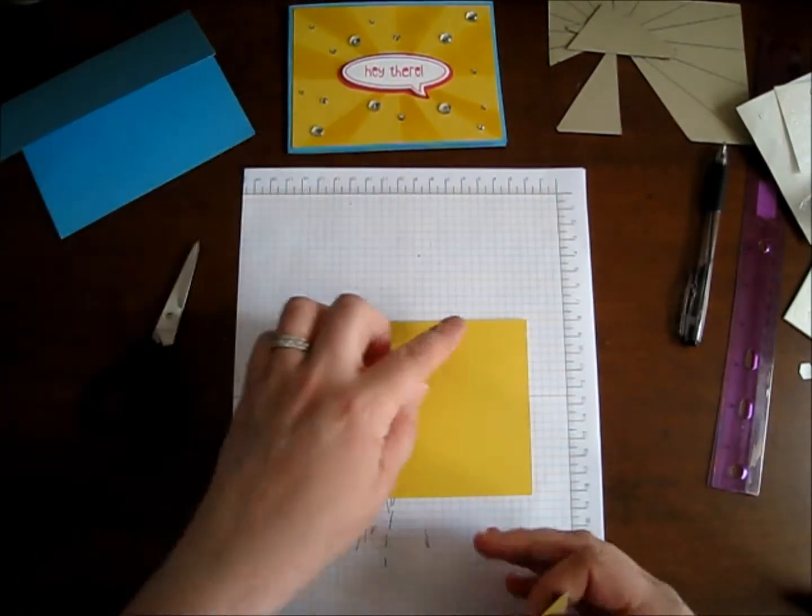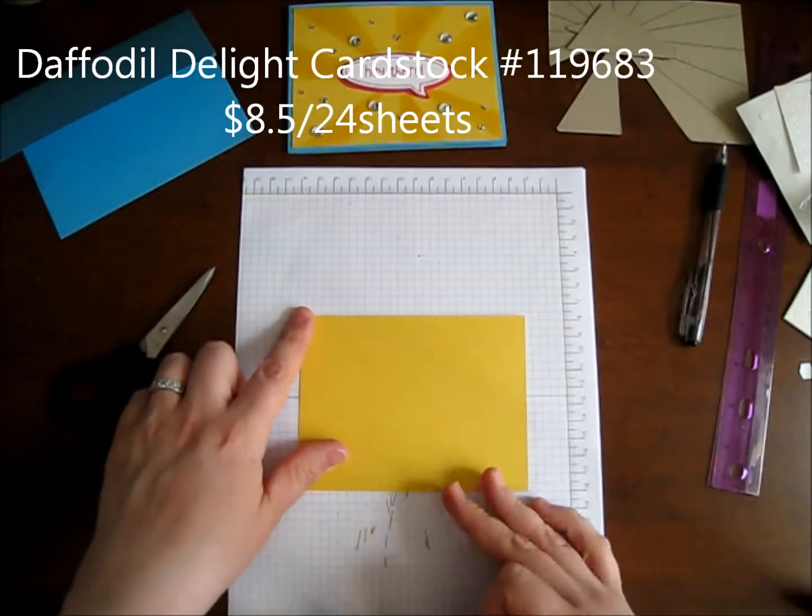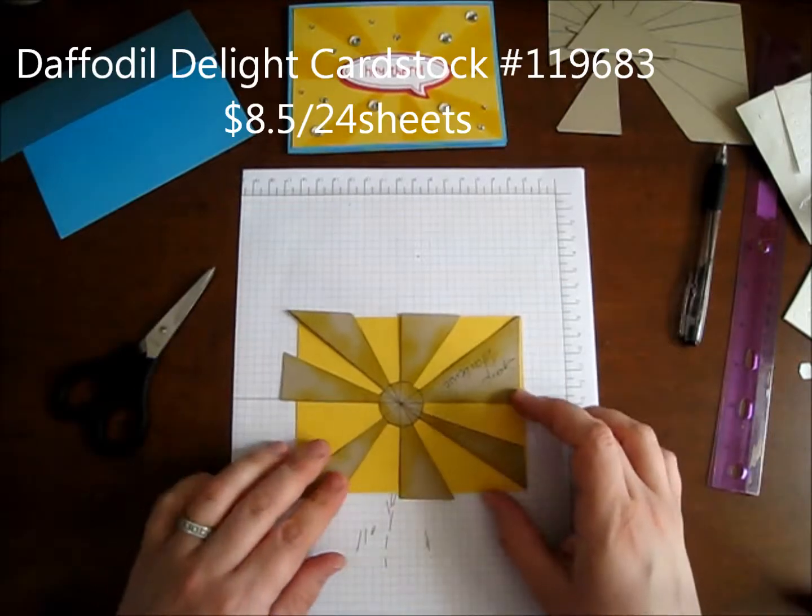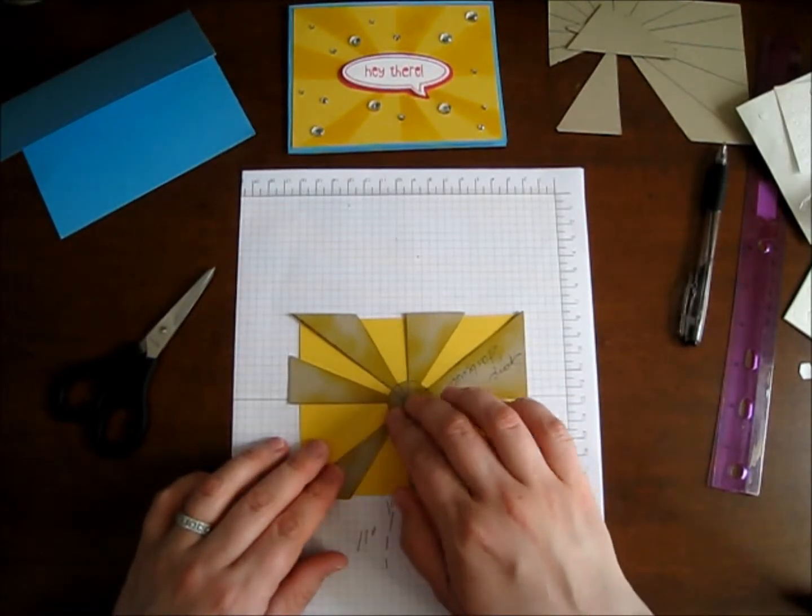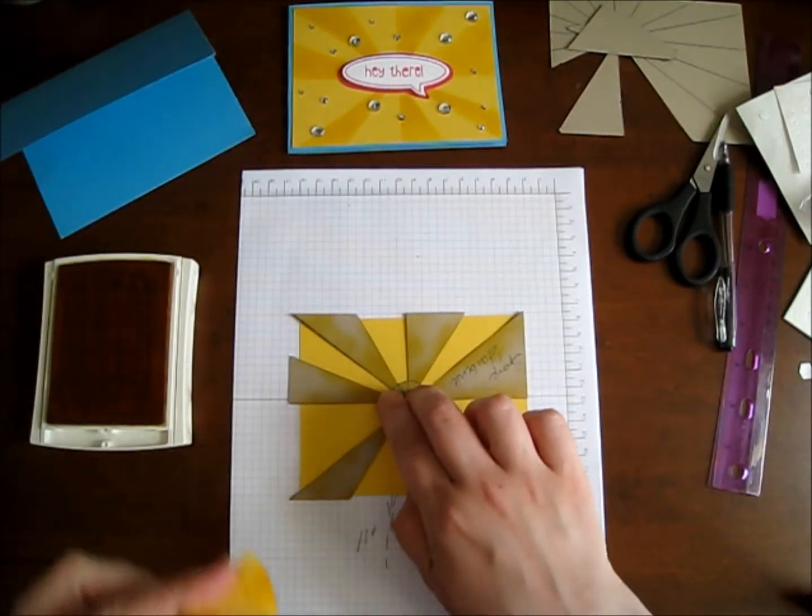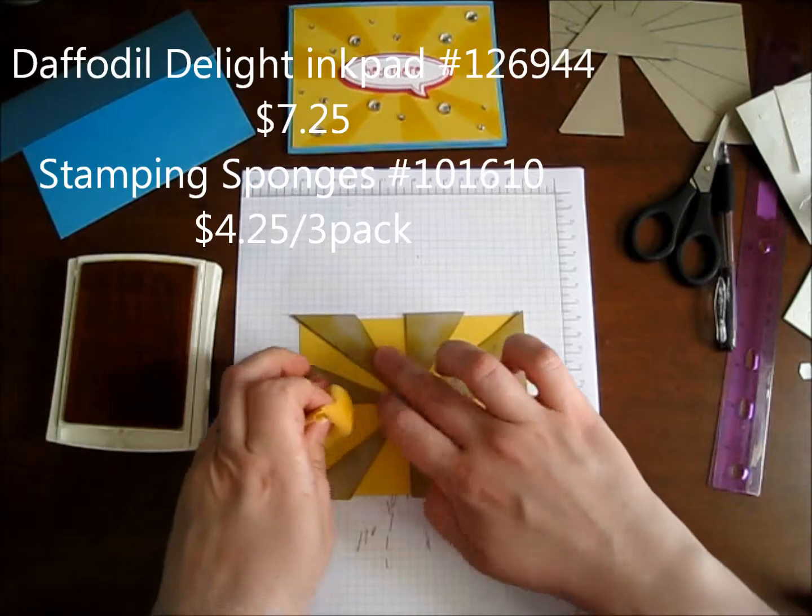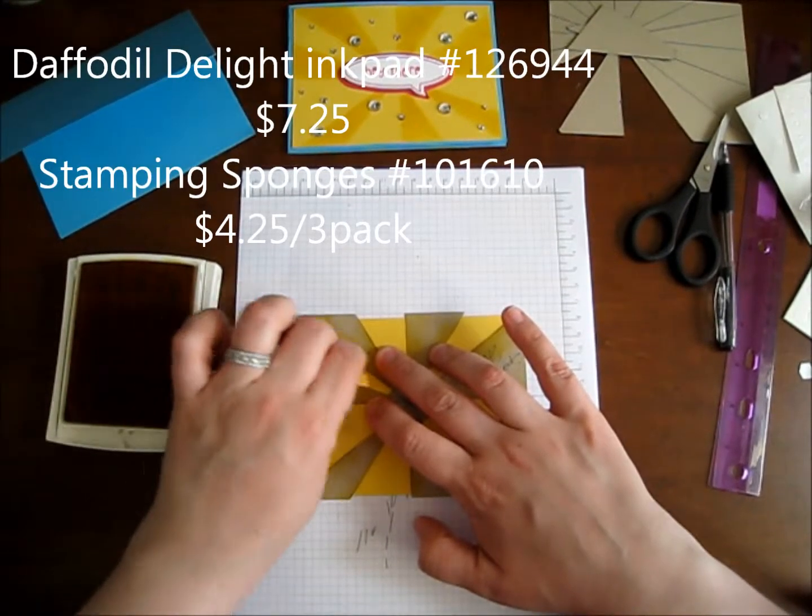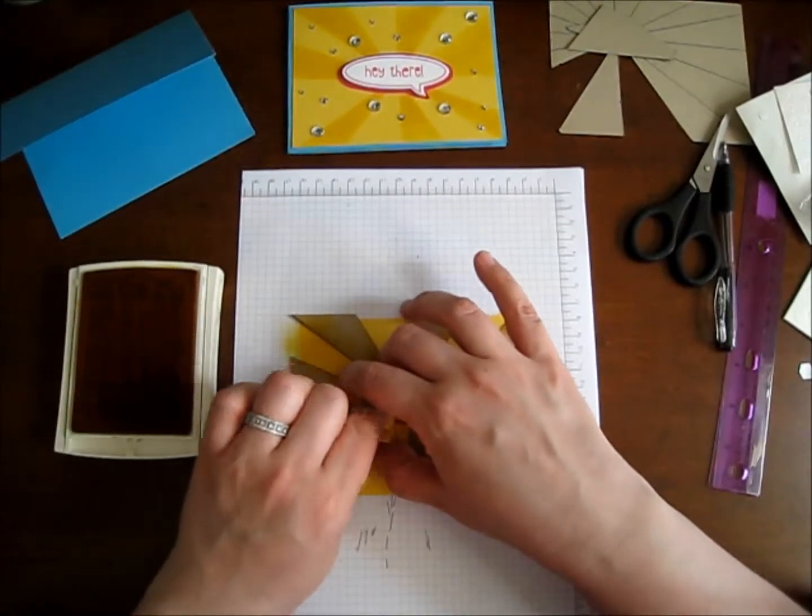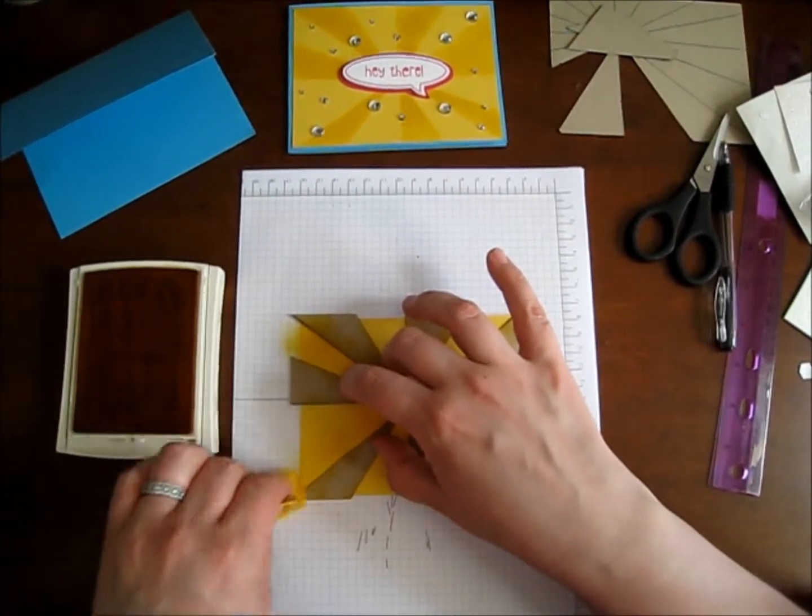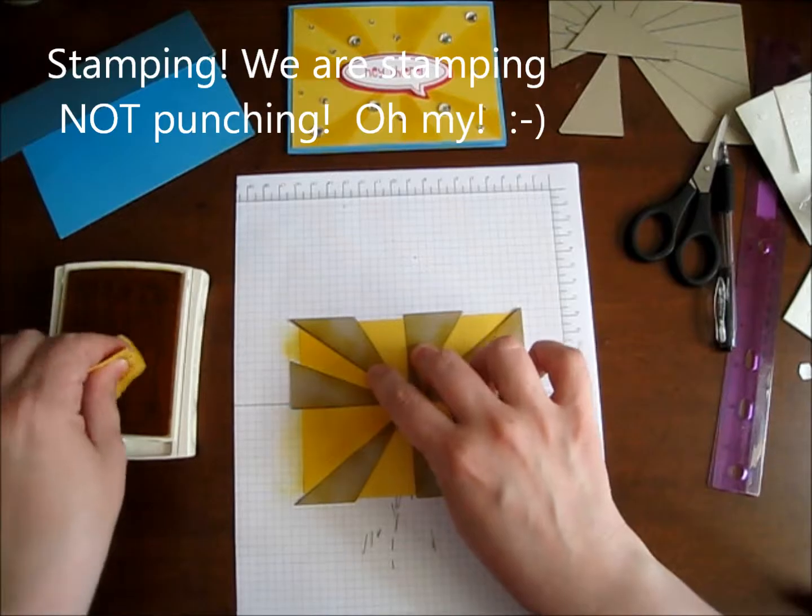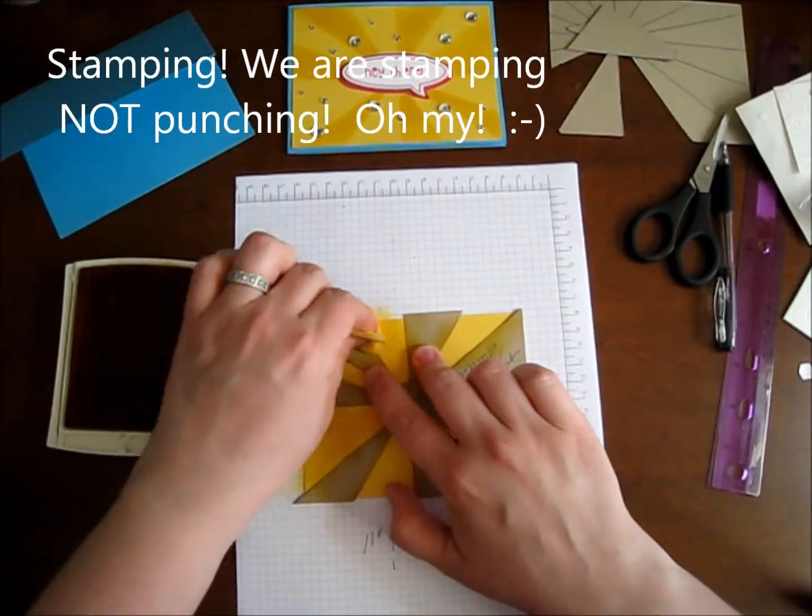Then I'm going to use my Daffodil Delight. And this is a little smaller than my card front. So it's five and a quarter by four. I'm going to put my template down over top. And then I'm going to get my Daffodil Delight. I use the same color as the cardstock. I'm going to get ink in the sponge and sponge this puppy up. You do have to have nimble fingers for this one because you want to be holding your cardstock as you're punching.